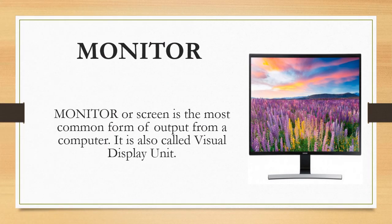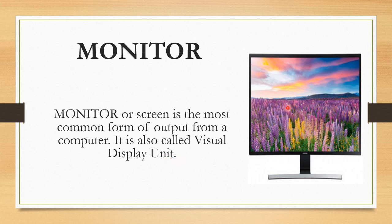Monitor, or screen, is the most common form of output from a computer. It is also called Visual Display Unit. Whatever information you see on the monitor is also referred to as Soft Copy.